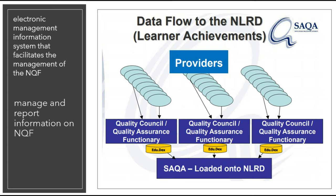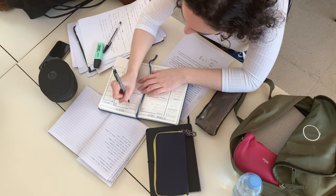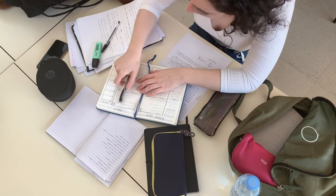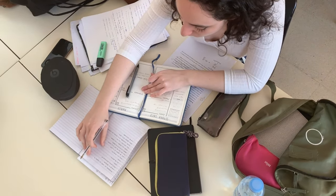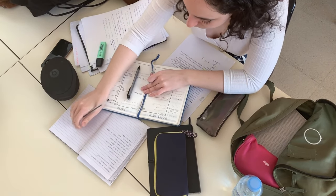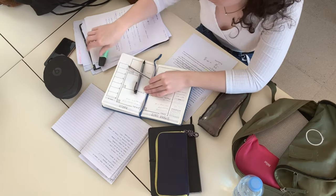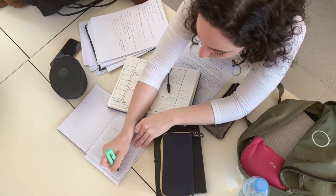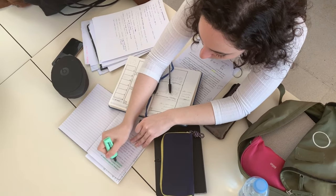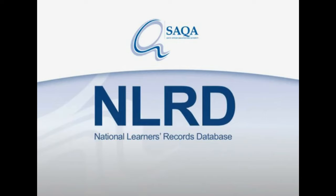How does that information get to SACWA? An accredited training provider is responsible for forwarding the results of all learners found competent on their qualifications to the quality assurance body that accredited them. The quality assurance body then sends that information through to SACWA via what they call the Edudex system — that's how your information from any private or public provider reaches the National Learner Record Database.